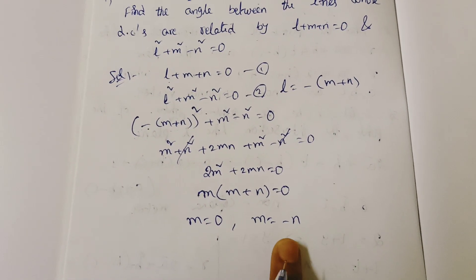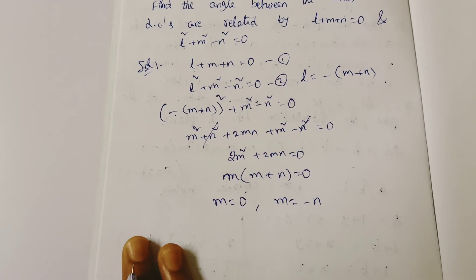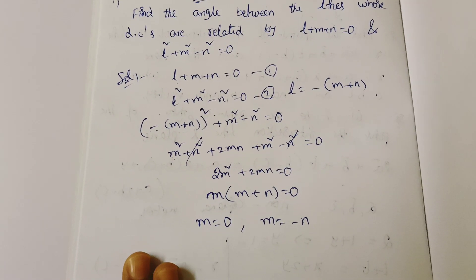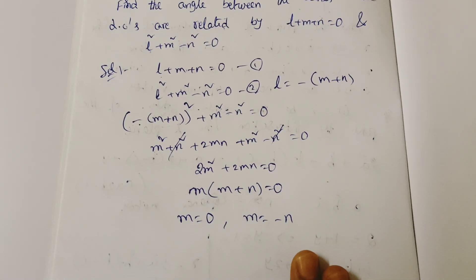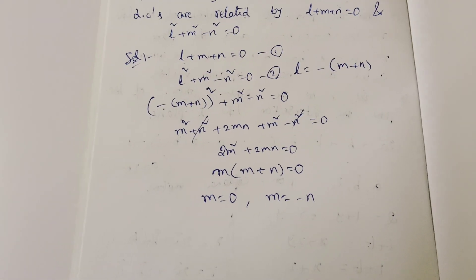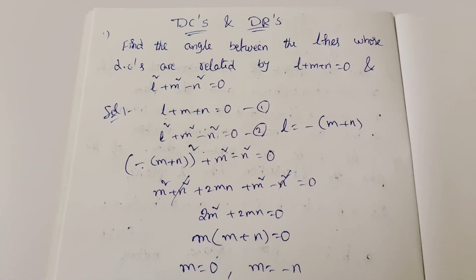Factoring: 2M(M plus N) equal to 0, so M equal to 0 or M equal to minus N. From these two cases we will find the direction ratios and then the angle.